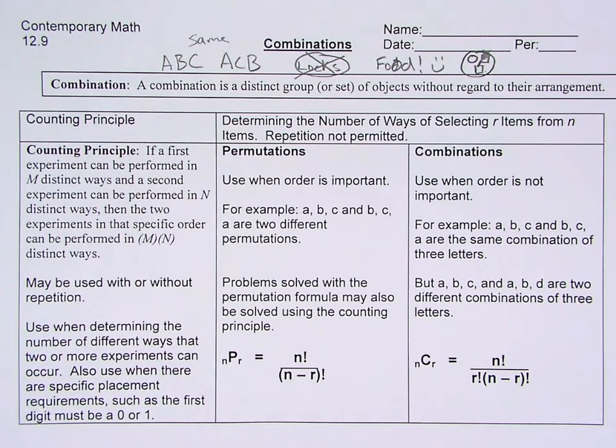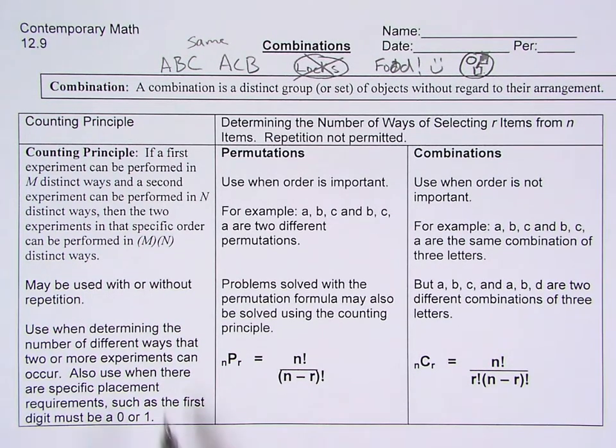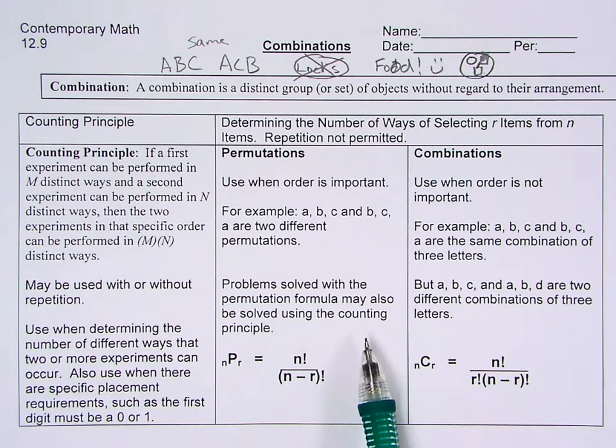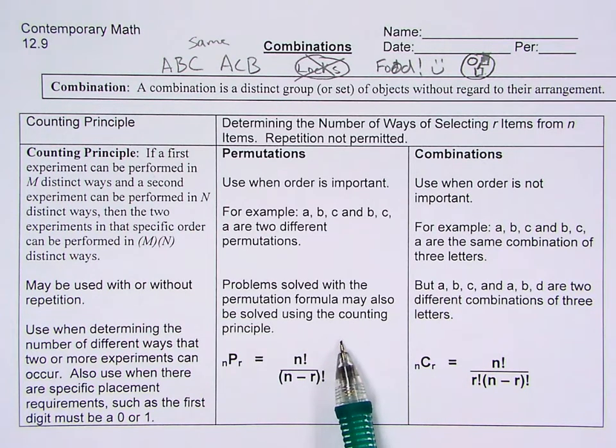Now we've been dealing with different ways of finding the total possible numbers, and you can use the counting principle, you can use permutations, or you can use combinations. So the trick is going to be deciding when to use each one. The counting principle is going to be if you have to put items in a specific order, and a lot of times you're going to have elements that need to go in a certain place, or they're going to be certain stipulations on certain elements.